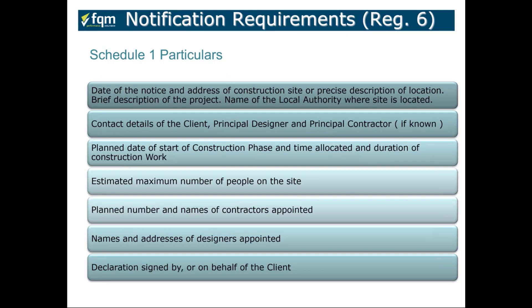The notification must include the date of the notice, address of the construction site or precise description of the location, a brief description of the project, the name of the local authority where the site is located, contact details of the client, who the principal designer and principal contractor are if known at that point, the planned date of the start of construction and duration, the estimated maximum number of people on site, the planned number and names of contractors appointed, names and addresses of designers appointed, and a declaration signed by or on behalf of the client.